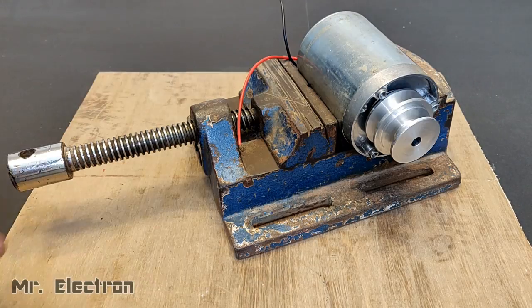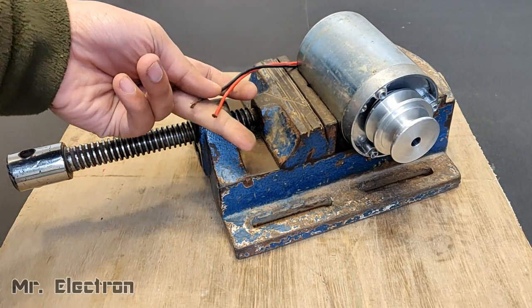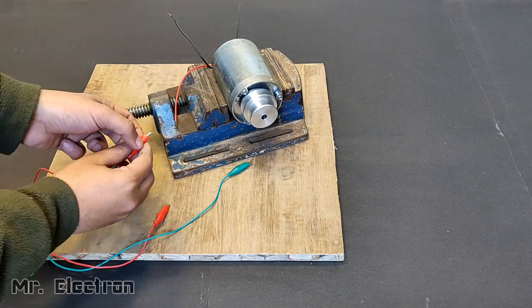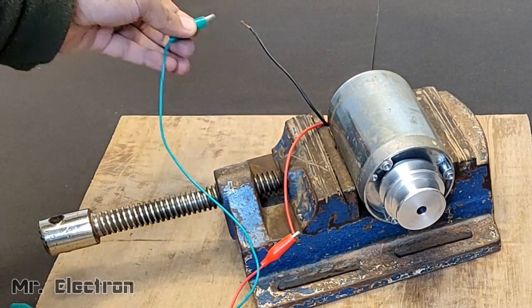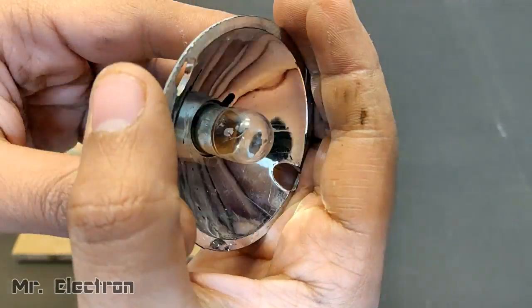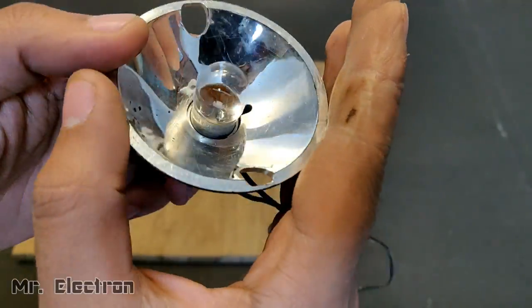I have placed the motor on the vice to test it in the generating mode first. Now these are the two jumper cables. To the wires coming out from the motor, I have connected jumper cables.